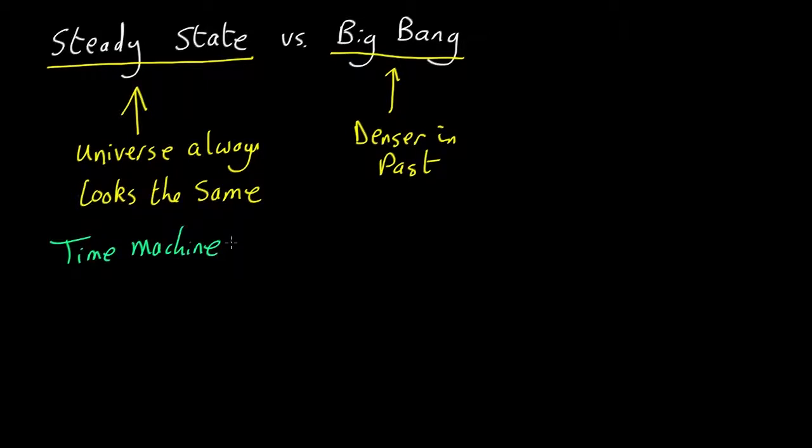We look around today, see what the universe looks like, then go back in time a few billion years and see what the universe looks like. If it was denser in the past, that's the Big Bang theory. If it looks exactly the same, steady-state theory. And luckily, in astronomy, we do have a time machine.